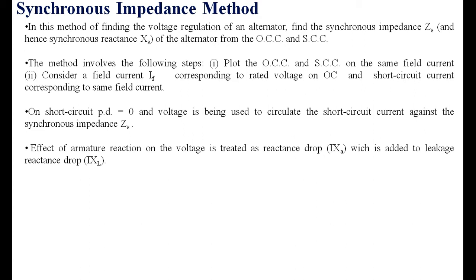In the synchronous impedance method, the armature reaction is treated as one of the voltage drops. There are three factors affecting the terminal voltage: one is the IR drop, another is the IXL drop, and then there is the armature reaction. The armature reaction is not actually a voltage drop — it is a modification of the main flux — but its effect is treated as an impedance drop in the form of XA.